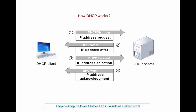For example, when you turn on your computer, it sends out a request called a DHCP Discover. Your router takes this request and sends it to the correct DHCP server. The DHCP server receives the discover packet and, based on availability, temporarily reserves one IP address for that client and sends back an Offer packet, along with IP address and DNS information.